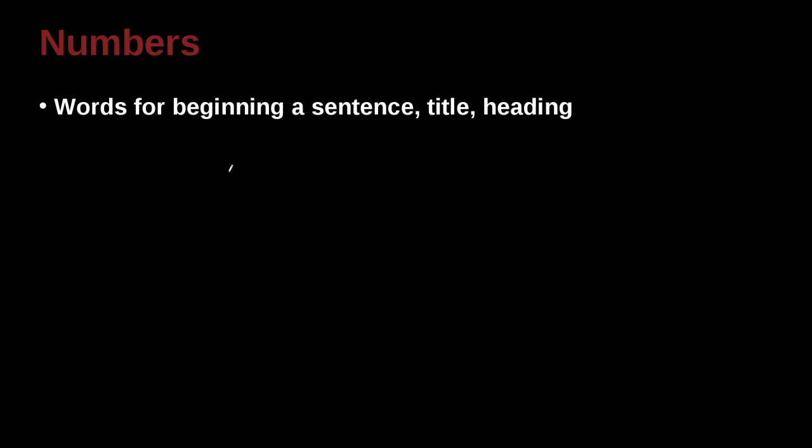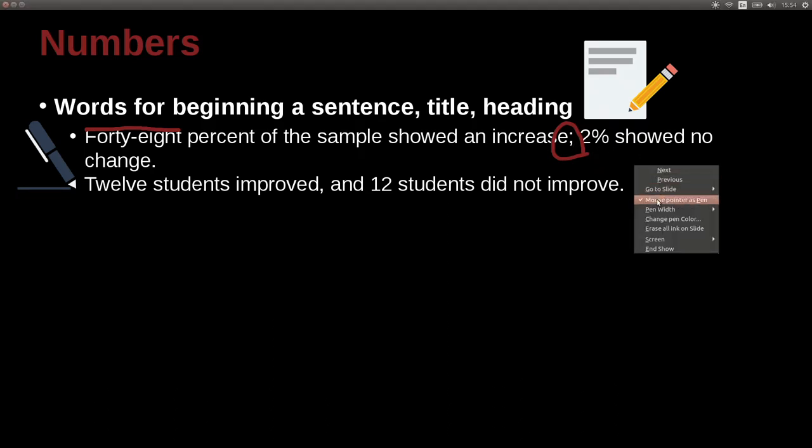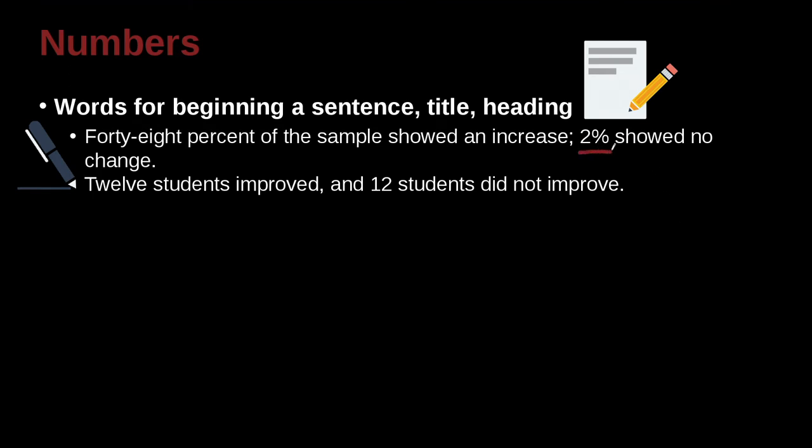If you're beginning a sentence, if you're going to write a title, or if you're going to write a heading, in that case you must spell out the word. As in this case, it's the first word in the sentence. 48% of the sample showed an increase. 2% showed no change. So here we have an example of a semicolon. And remember, with a semicolon we can put two sentences together. And that's what we've done here. But this is not the beginning of a sentence because this is not a period here, this is a semicolon. We're putting two sentences together. So in this case, this is not the beginning. It is a percentage, so we write it as a number. Here, this is a percentage, so we think we should write it as a number. But we have a special case. This is the beginning of a sentence. And the beginning of a sentence, you must spell it out.